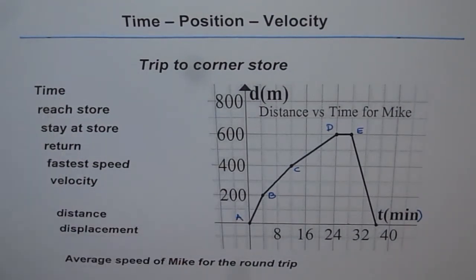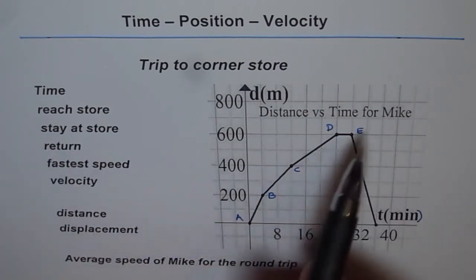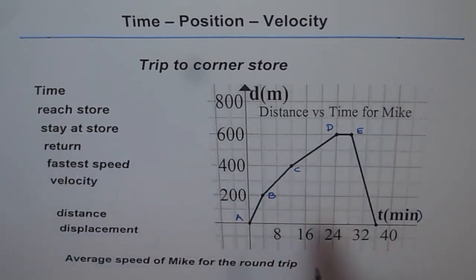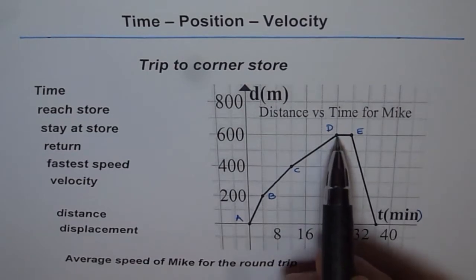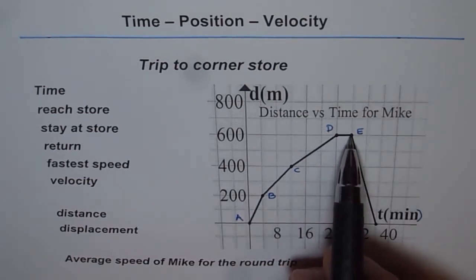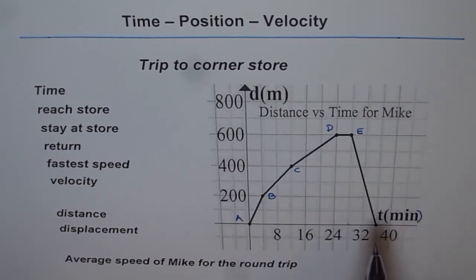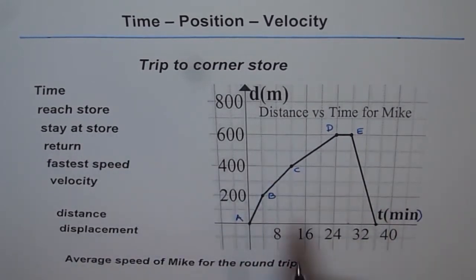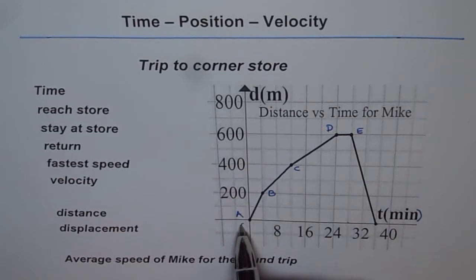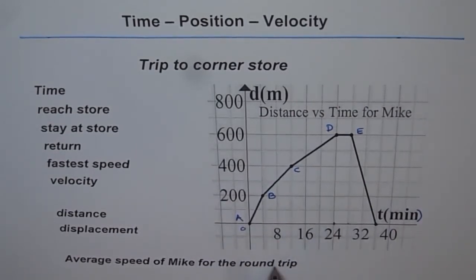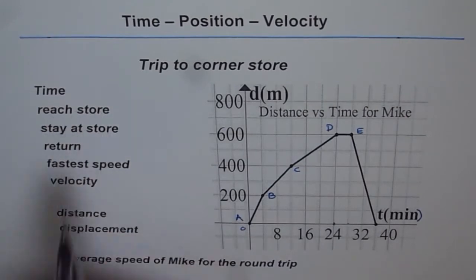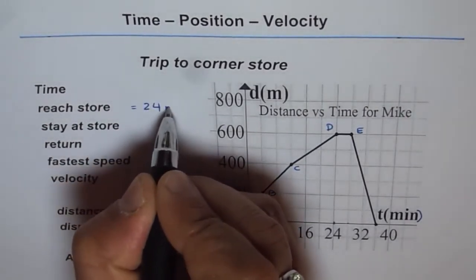Now let's answer these questions. How much time did Mike take to reach the store? We'll assume D to be the point at the store, because that's where he stops and then returns. Time taken to reach D will be from 0 to 24, so it is 24 minutes.